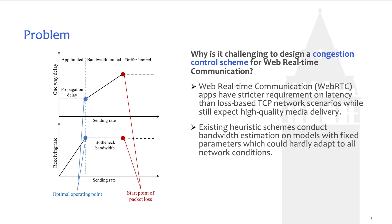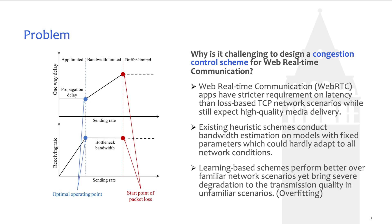To meet the real-time requirements, existing heuristic schemes estimate the bandwidth based on a fixed model operated on a certain network that could hardly adapt to all network conditions. As a result, they may tend to underutilize or overutilize network capacity in many cases. Learning-based, especially reinforcement learning-based schemes, commonly employ deep neural networks to generate bandwidth estimates. They outperform the state-of-the-art heuristic schemes when applied on network scenarios with collected network traces used during training. However, it brings severe degradation to the quality of network transmission in unfamiliar scenarios that the agent has never experienced during training.